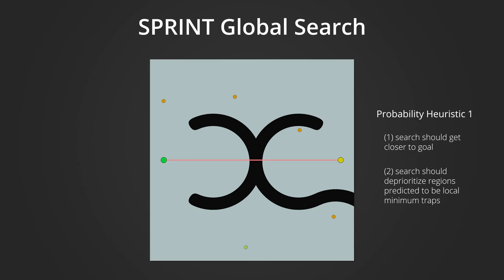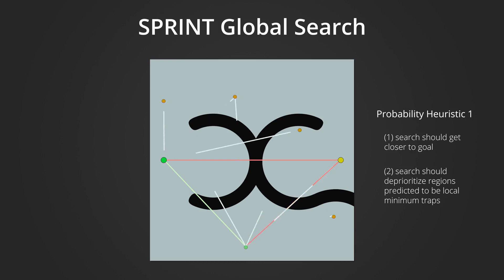If a local search connection between two points is successful, the reached milestone point is added as a global node in the tree, and new local searches can branch out from this node as well. This process continues until the overall goal is found or another batch of milestone states has to be added. In our paper, we show that the structure of the global search affords probabilistic completeness in the limit, but the search as a whole is more geared towards finding solutions quickly with just a sparse set of milestones.